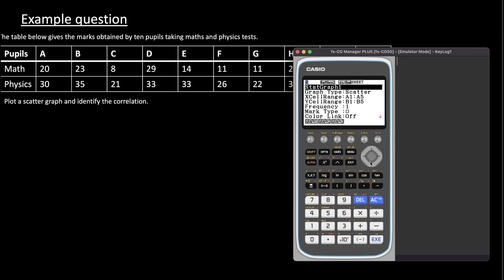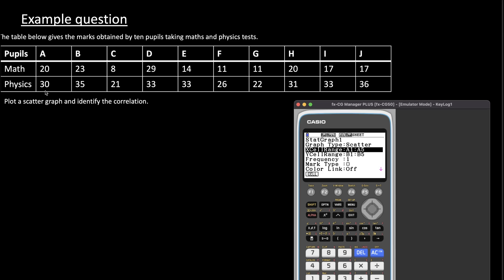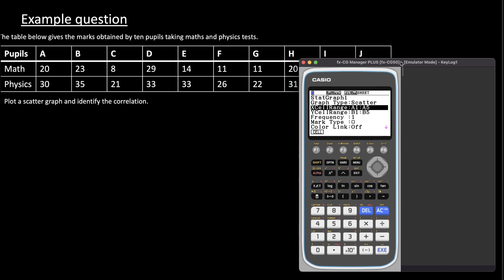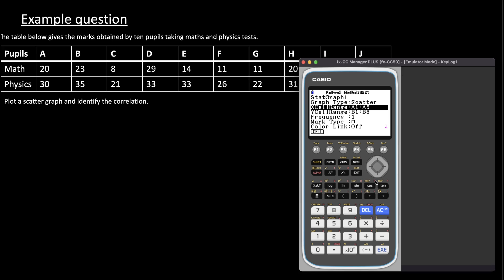Which in this situation, we have 10 different values. So we have to select A1 to A10. And similarly, we have to select Y range for Y values, B1 to B10.